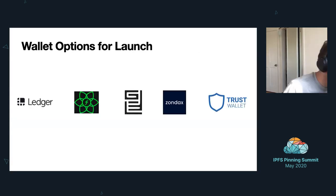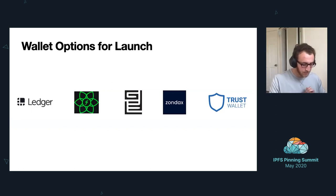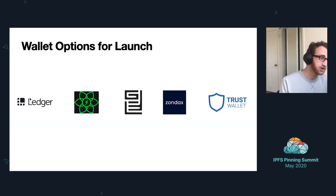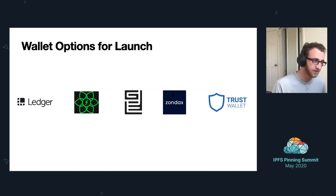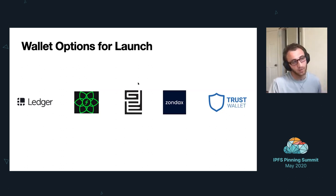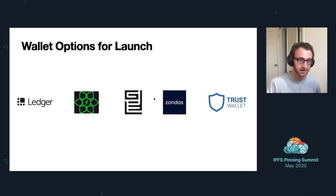Last topic: wallets. For mainnet launch these are the main wallet options I know of — there may be more in the future. The Glyph wallet we made works with both the Ledger and the Zondax signing library — it's a nice web interface for sending Filecoin and seeing transaction history. If you're planning on accepting a lot of Filecoin, I'd highly recommend using a hardware wallet. But if you just want to experiment with small amounts, you can use the Glyph wallet with your own seed phrase for a MetaMask-like experience in the browser.